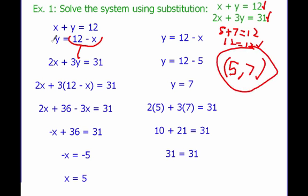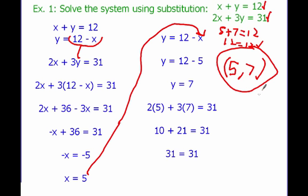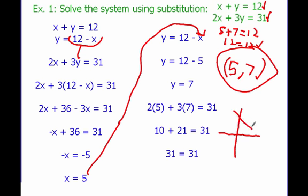So, all we did: we solved for y in our first equation, plugged in that result into the second equation, used that to figure out what x was, then took x and plugged it back into the first equation to find y, and then checked our work. If we think about this from graphing — if these two lines crossed, they would cross at this point, and that point is (5, 7). This is how we solve using substitution.